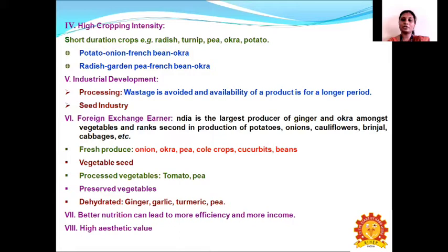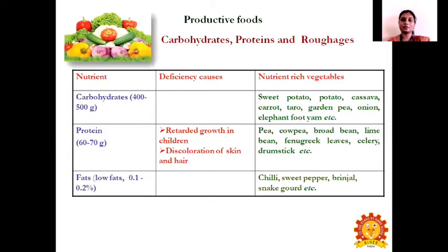Fresh produce exports include onion, okra, peas, cole crops, pepper, and beans. Vegetable seeds and processed vegetables like tomato and pea products are also exported. Dehydrated vegetables include ginger, garlic, turmeric, and beans. Better nutrition also leads to more efficiency and more income, and vegetables also have a high aesthetic value.